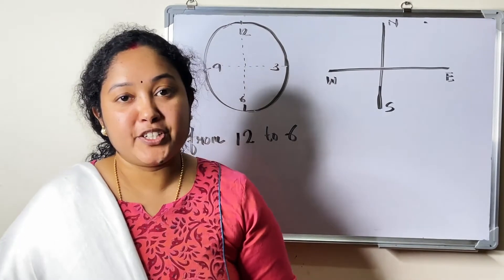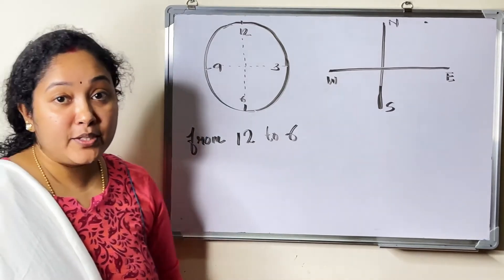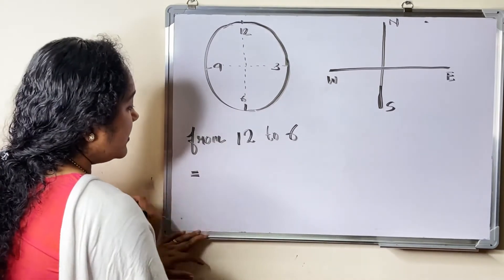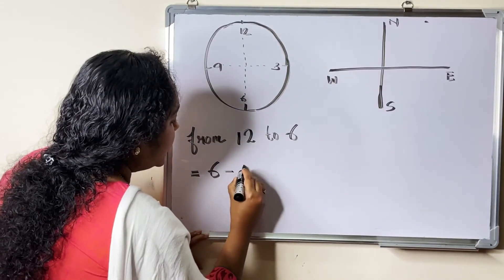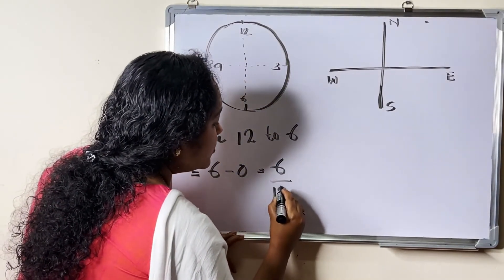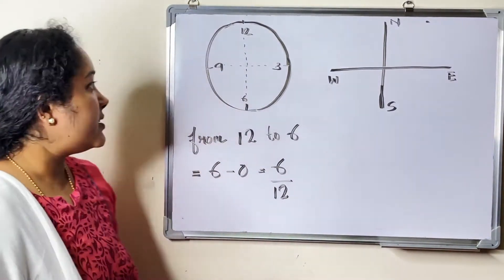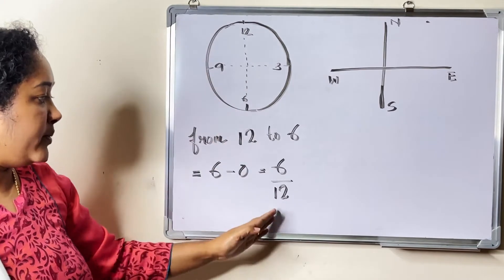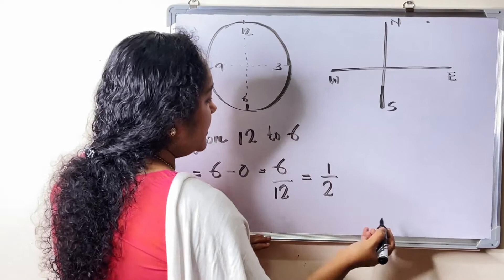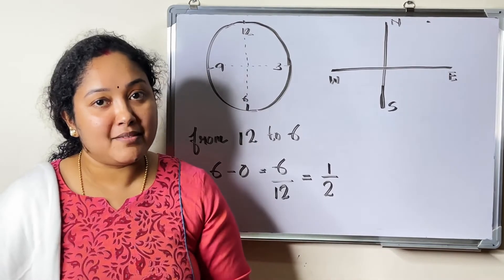Next, let's find out the fraction of revolution. The first one is from 12 to 6. So 6 minus 0 equals 6, divided by 12 — because we take one revolution clockwise, we take 12. That is equal to 1/2. From 12 to 6, we take half of a revolution.